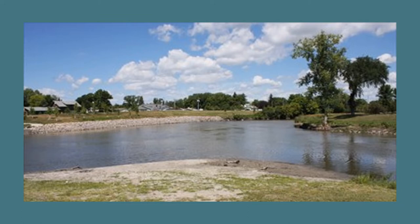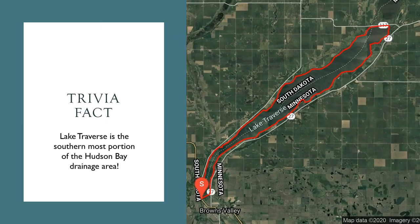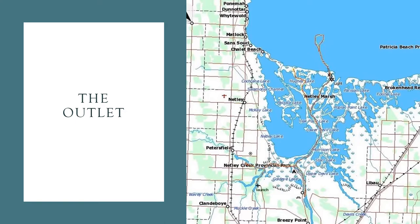An interesting side note about the headwaters of the Bois de Sioux River is that it drains Lake Traverse, which lies on the border of Minnesota and South Dakota, and is the southernmost area of the Hudson Bay drainage. The Red River basin is a neat basin, and we will have all kinds of little trivia facts. I will highlight them in specific call-outs to reinforce your learning and improve your scores on trivia nights.